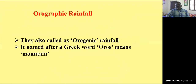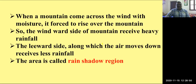The second one is orographic rainfall. This is also called as orogenic rainfall because the term is derived from a Greek word 'oros'. Oros means mountains. It means mountains are the cause for this particular rainfall, so the rainfall is called as orographic rainfall.